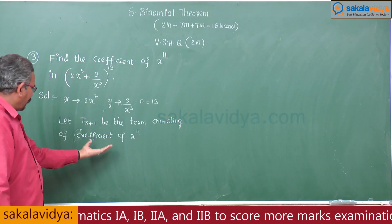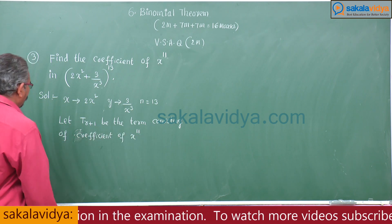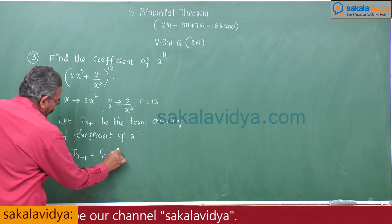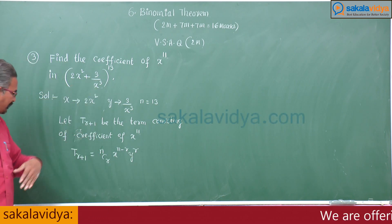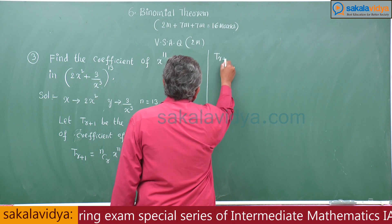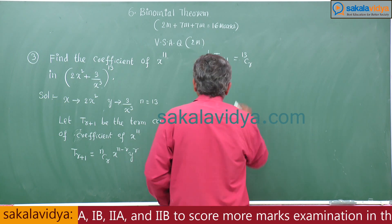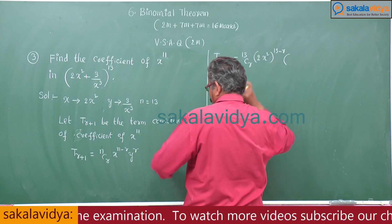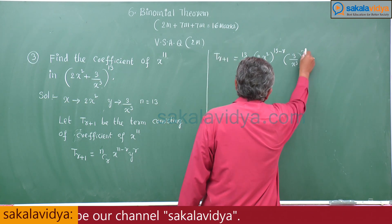If an independent term is asked, we write 'independent term,' which is x to the power of 0. Now, T(r+1) = nCr · x^(n−r) · y^r. Substituting: T(r+1) = 13Cr · (2x²)^(13−r) · (3/x³)^r.